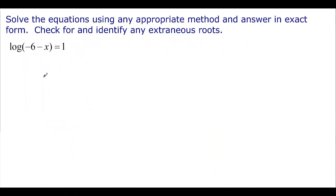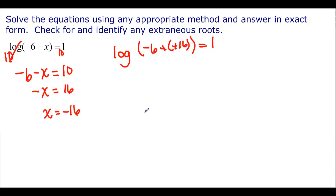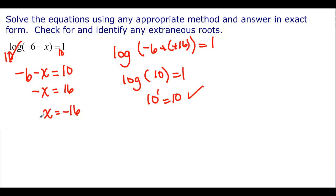Here we have one log on one side equal to a constant, so we exponentiate: 10 to that log equals 10 to the first. The log and exponential cancel, leaving negative 6 minus x equal to 10. Adding 6 to both sides: negative x equals 16, so x equals negative 16. Checking: log of (negative 6 minus negative 16) equals log of 10, which equals 1. The argument is positive — so x equal to negative 16 is a valid solution.